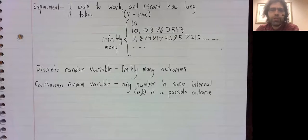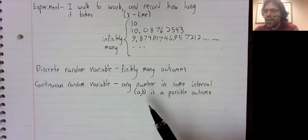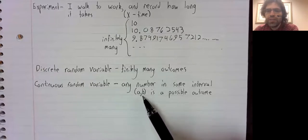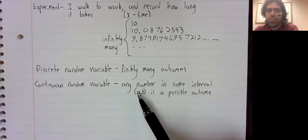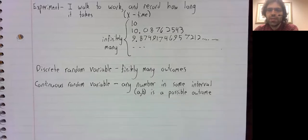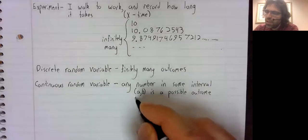We'll call a random variable continuous if it can take on any value in some interval from A to B.